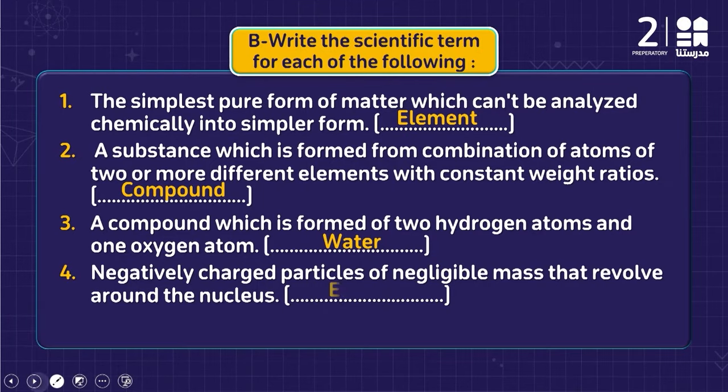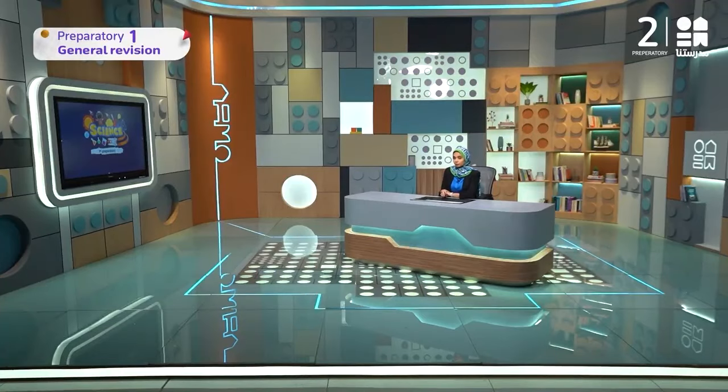Electrons are negatively charged particles of negligible mass that revolve around the nucleus. As we said before, an atom consists of a nucleus at the center and electric charges which revolve around it. These negative electric charges are called electrons.